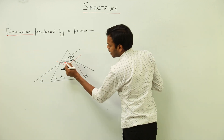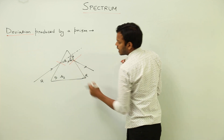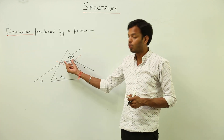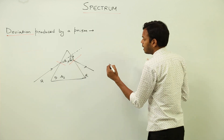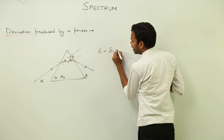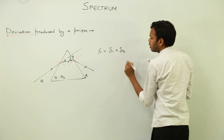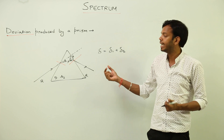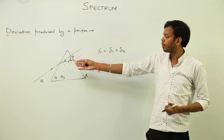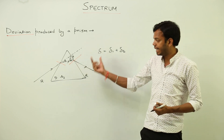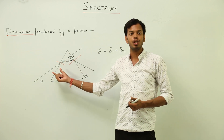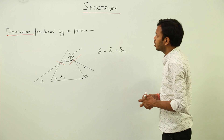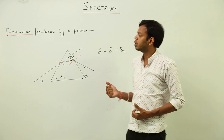In this triangle, the external angle property states that an external angle equals the sum of the two non-adjacent interior angles. So the total deviation δ equals δ1 plus δ2. That means the total change in the path of the incident ray is the sum of the deviations due to the first and second surface refractions. This is called the deviation produced by a prism.